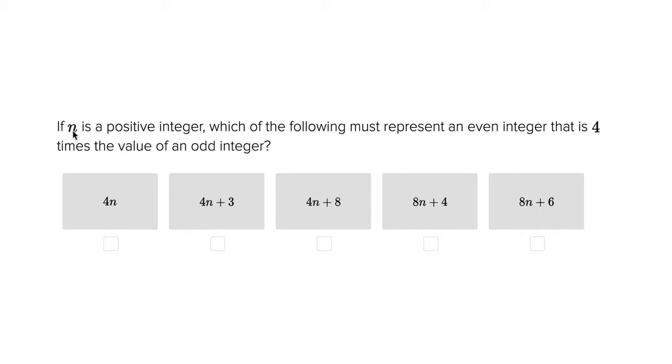The first thing we're told is that n is a positive integer. The second thing we're told is that it must represent an even integer. So if we plug in positive integers for each of these, let's go ahead and do some of the first five, you should be able to get an even integer as a response.